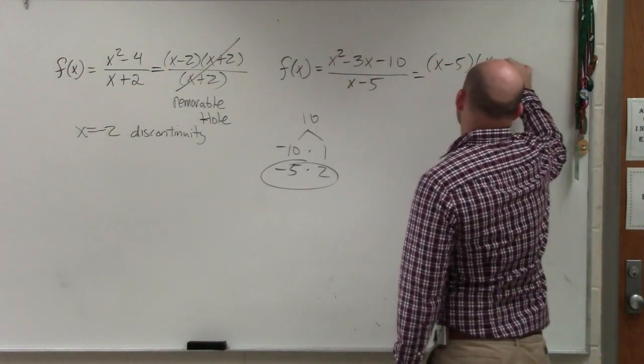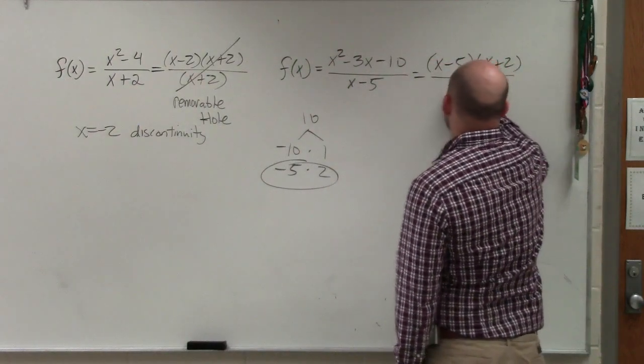So x minus 5 times x plus 2 divided by x minus 5.